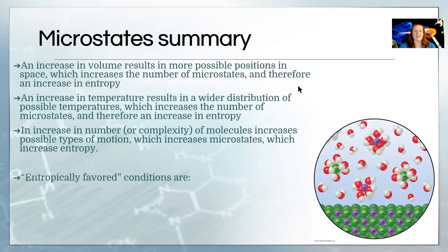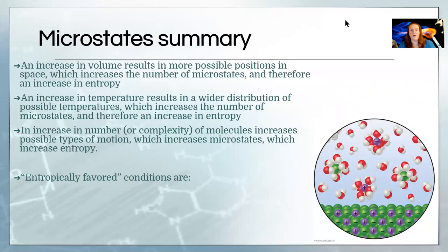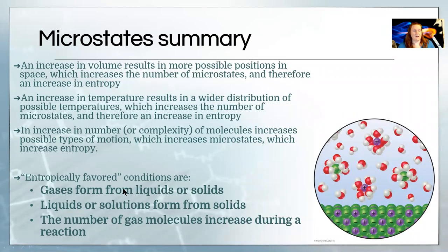So, in summary, microstates increase when you increase the volume because you're giving it more positions. If you increase the temperature, you're going to increase the number of microstates because you're giving things more energy level options. If you increase the concentration or the pressure, or if you increase how complicated the molecule is, then you are increasing microstates. When we say things are entropically favored, what we mean, and you should write these down, is that entropy is increasing in the following situations. Your microstates are increasing. If you go from a liquid or a solid into a gas phase, that is entropically favored. You have more microstates, more choices for energy and position.